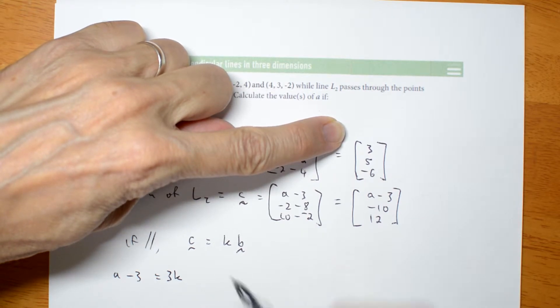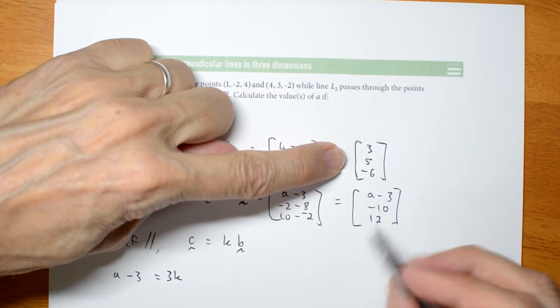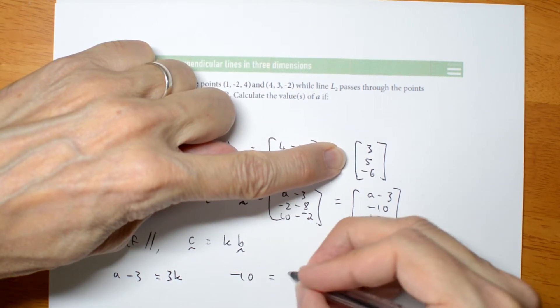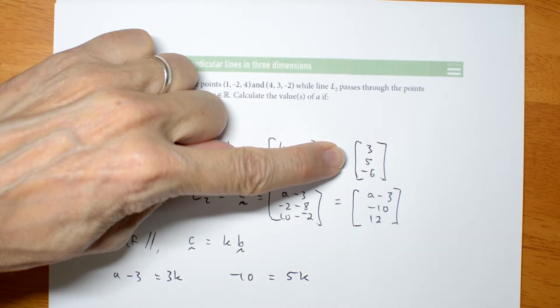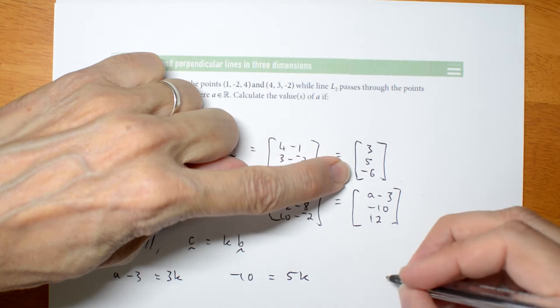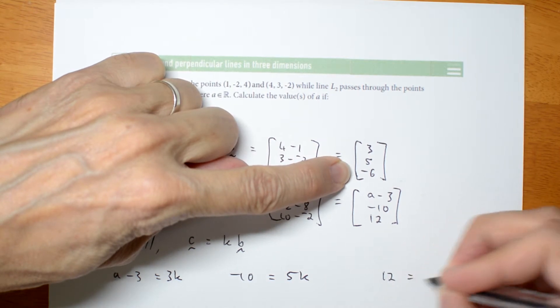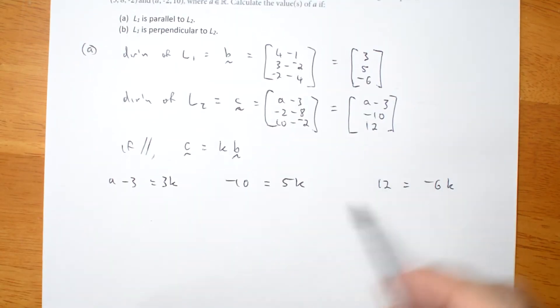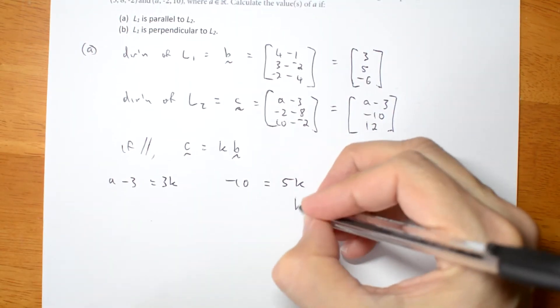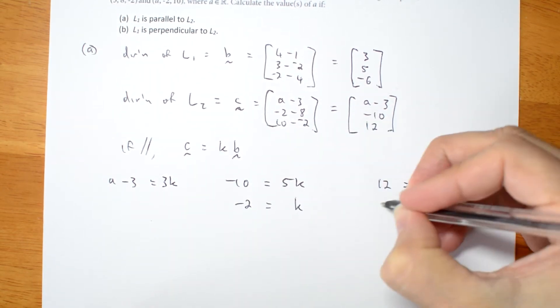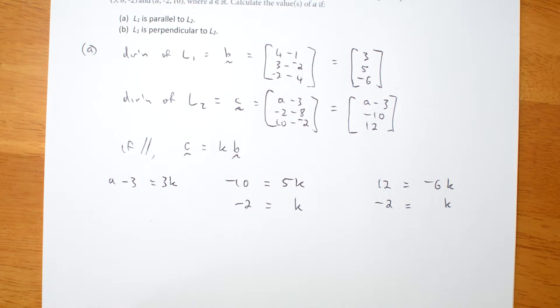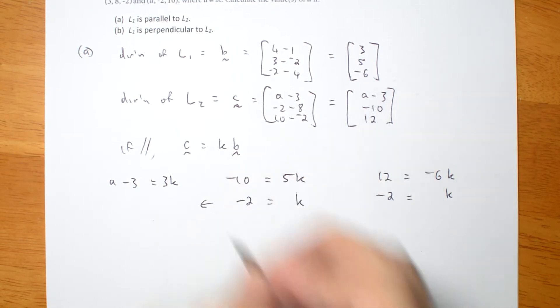So let's look at the other coordinates. Negative 10 is 5K, K times this one. That's good. I can find a value for K. And the third one, make sure it's the same. 12 is negative 6K. Now both of these will give me the same value for K, negative 2. And that's good.